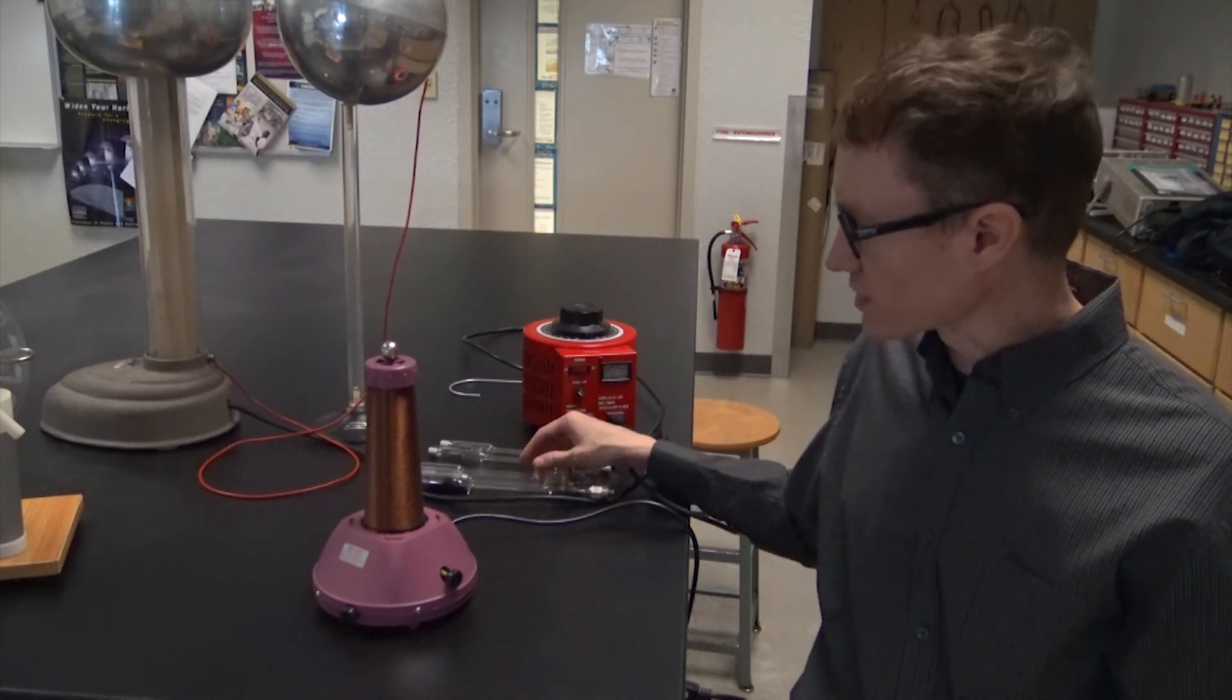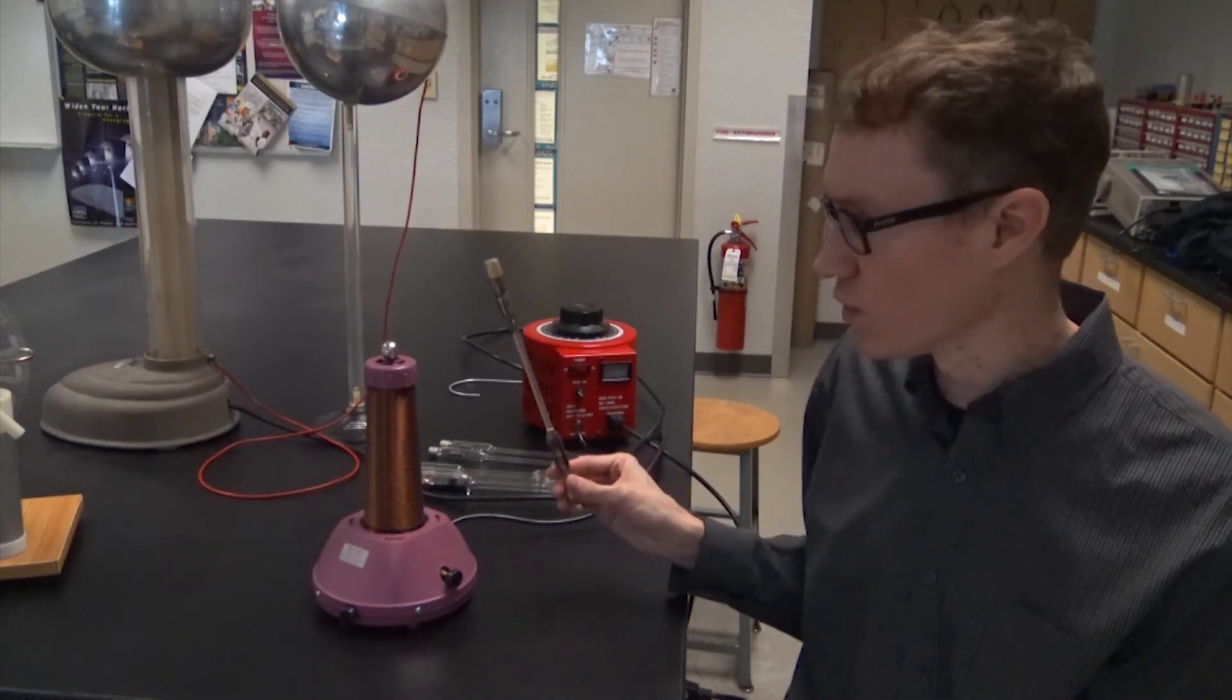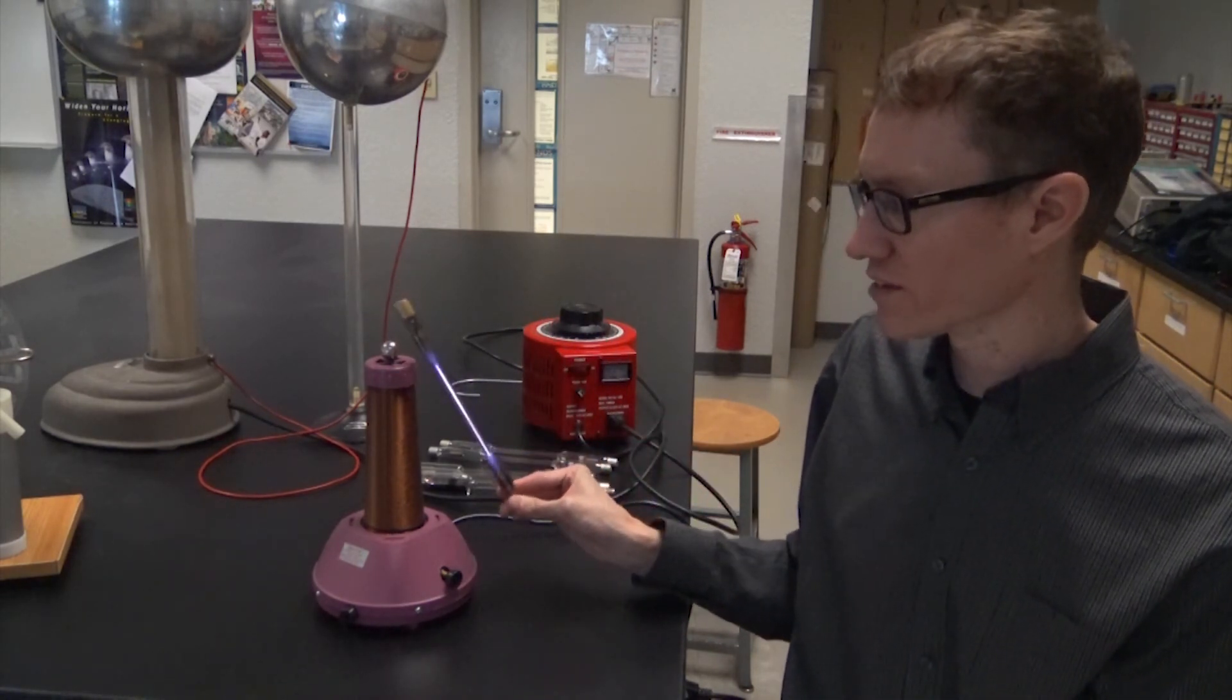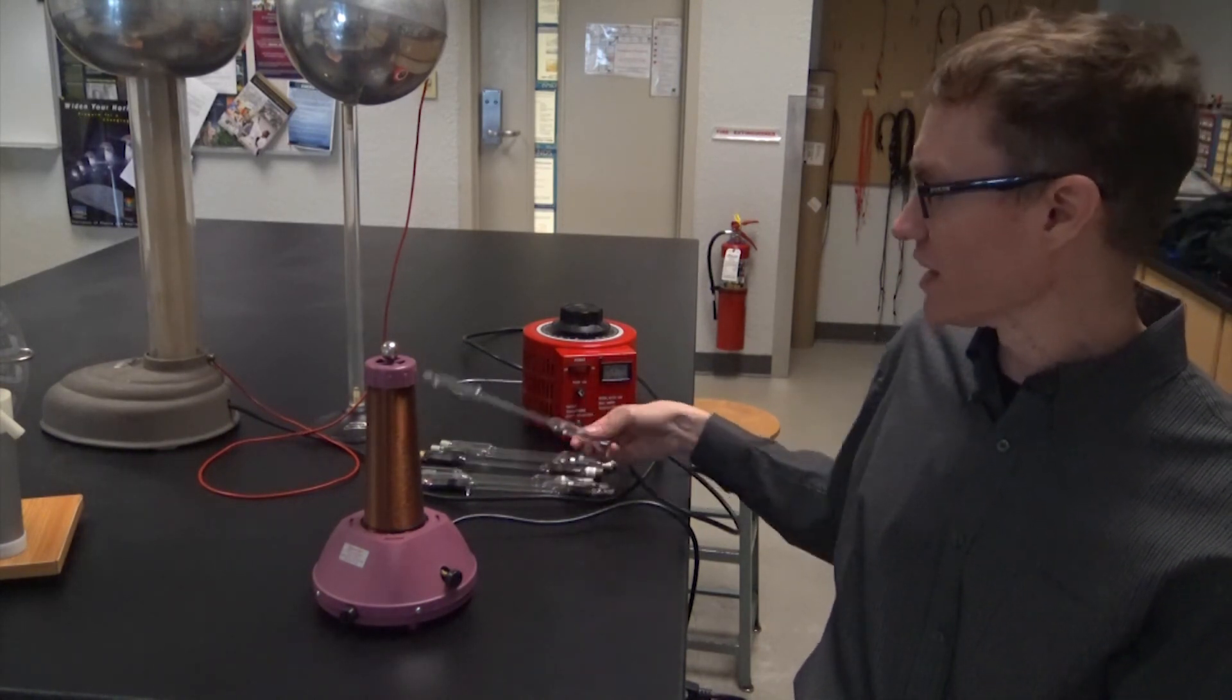Now if we compare that, for example, to hydrogen, you'll see that I have to hold the tube a lot closer to the Tesla coil, and the glow is not very bright. That's because the electrons are held very tightly in hydrogen, and it's more difficult to ionize.